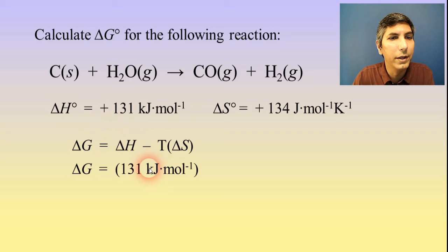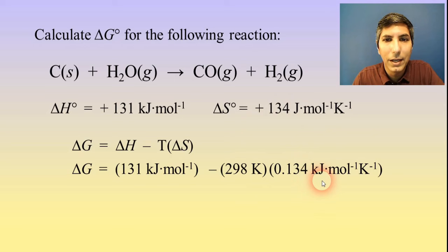Now for the T, do you know what the temperature is? The problem doesn't actually come straight out and tell us what that is. But that little degree sign right there, especially up here when it says calculate delta G, that little degree sign tells us that we are at standard conditions, which would be 25 degrees Celsius or 298 kelvins. Now delta S is 134 joules per mole per kelvin, but we have to convert it. So that's going to be 0.134 kilojoules per mole per kelvin.